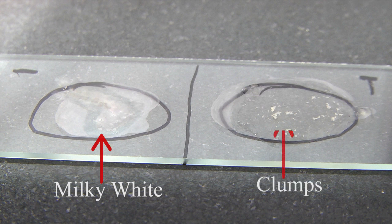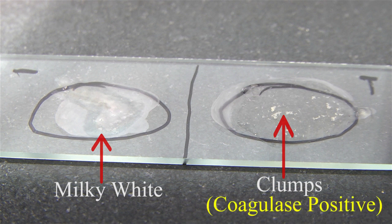As the test sample also forms clumps like the positive control, it can be reported as coagulase positive Staphylococcus or Staphylococcus aureus. All strains testing negative for slide coagulase should be tested further by the tube coagulase test.